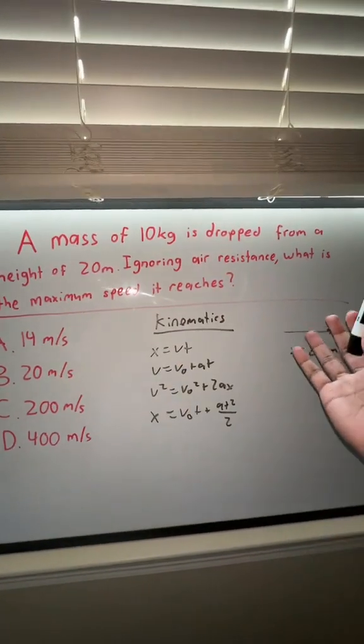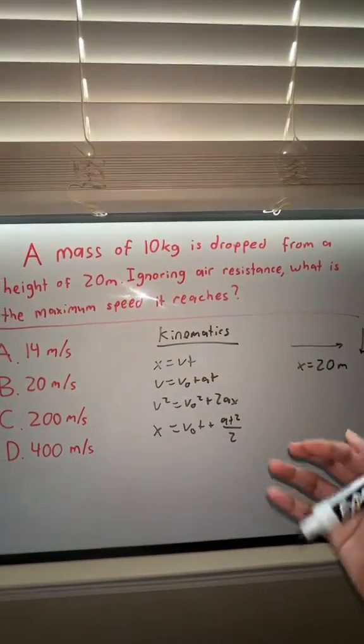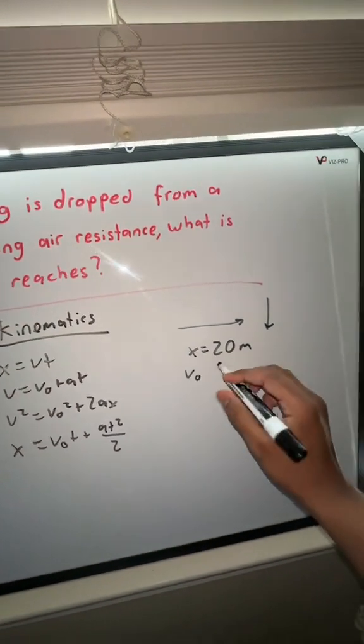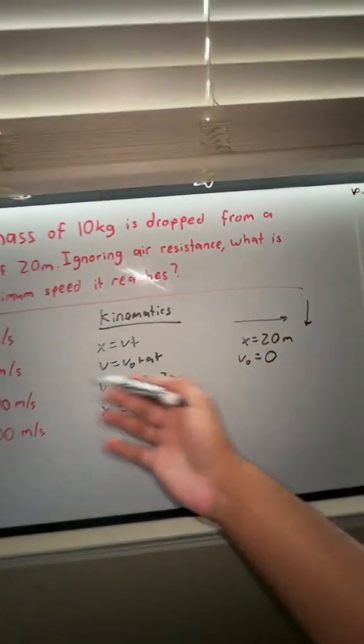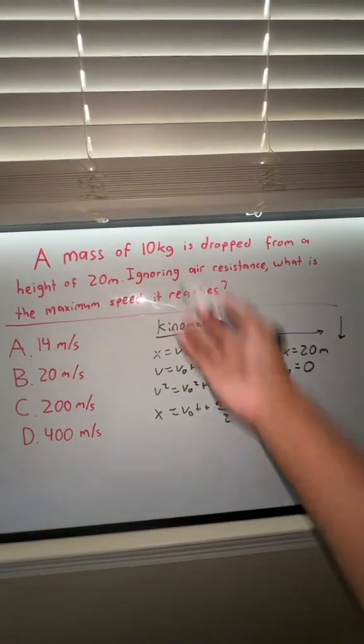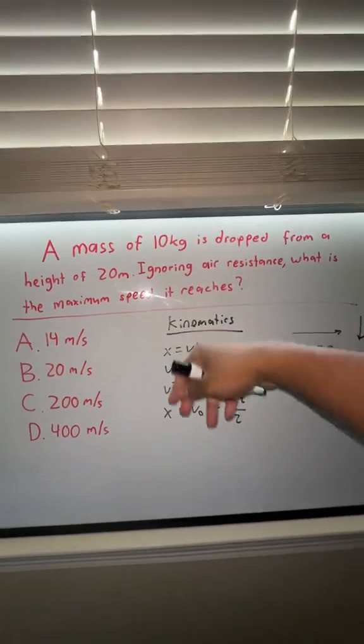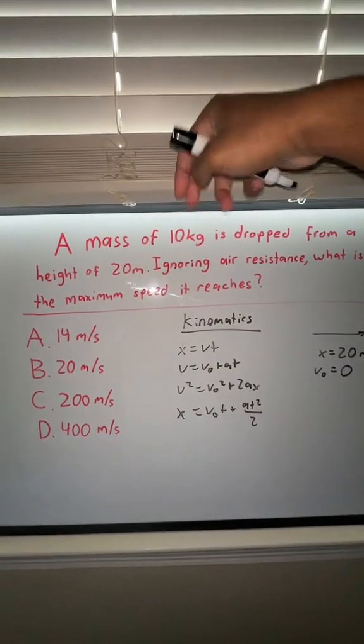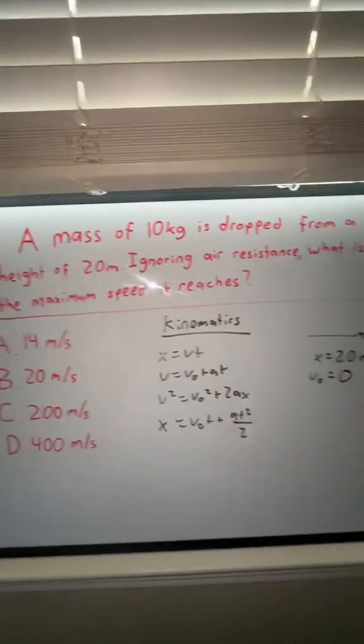There's one more thing that's not in the question itself, but you should be able to infer it: our initial velocity, v₀, is going to be zero because it doesn't say it was already moving. It's saying that it was dropped, so when it starts dropping it's at zero meters per second and then it increases based on the acceleration.